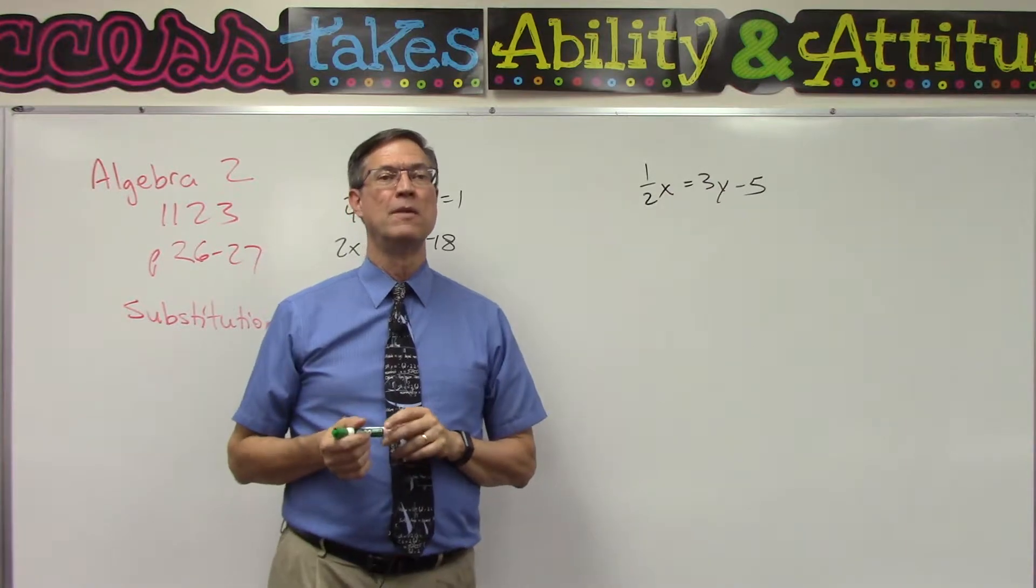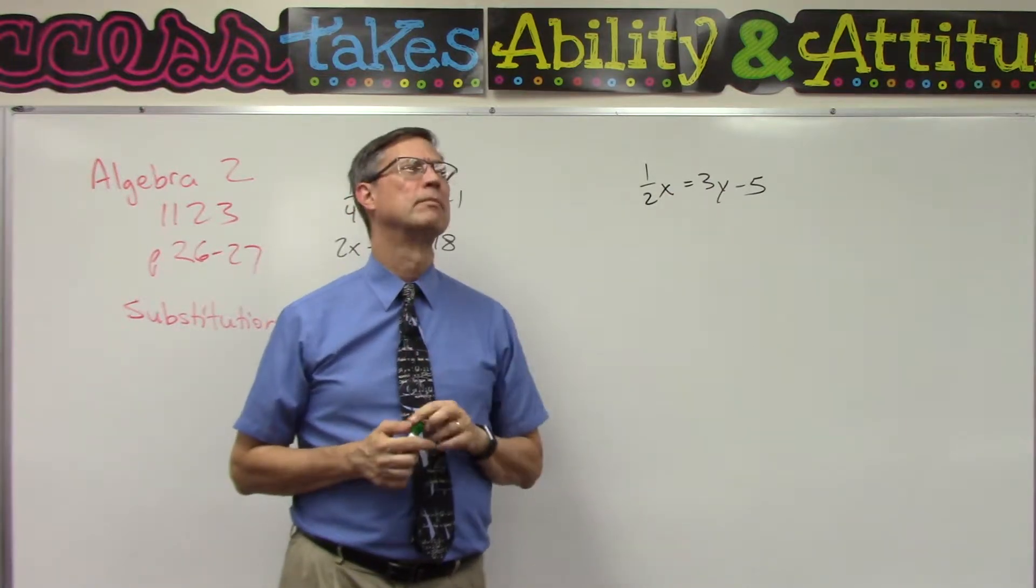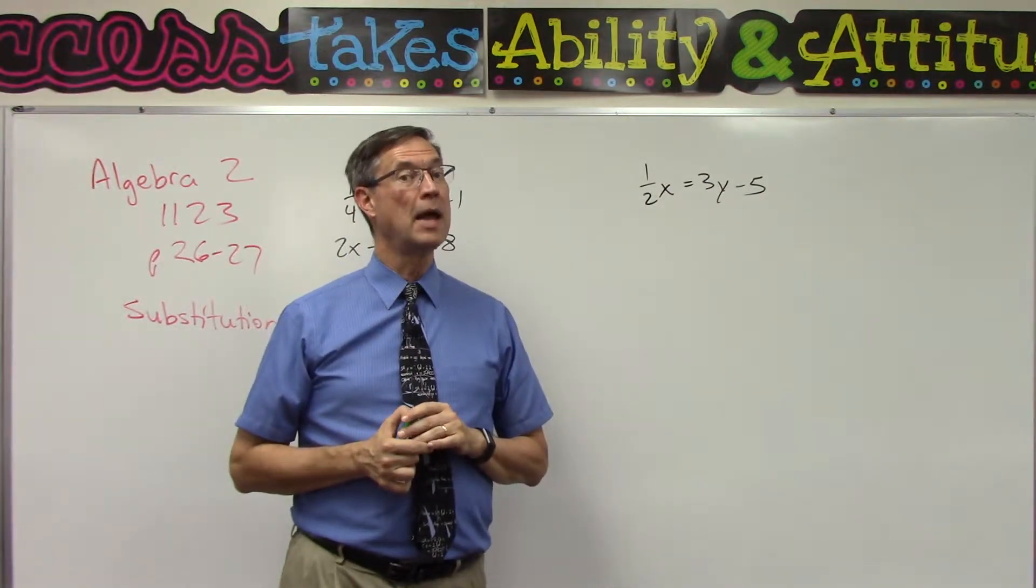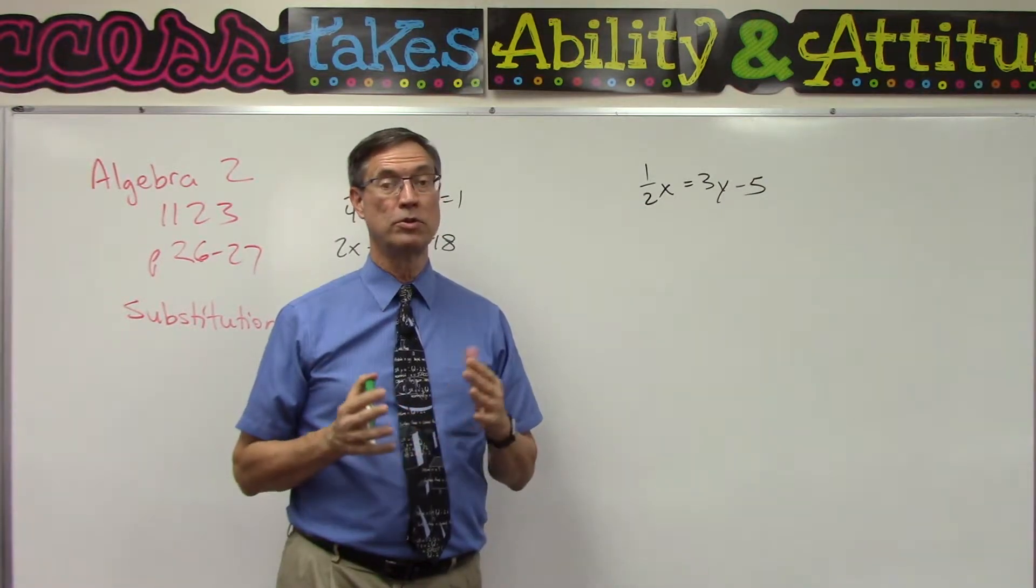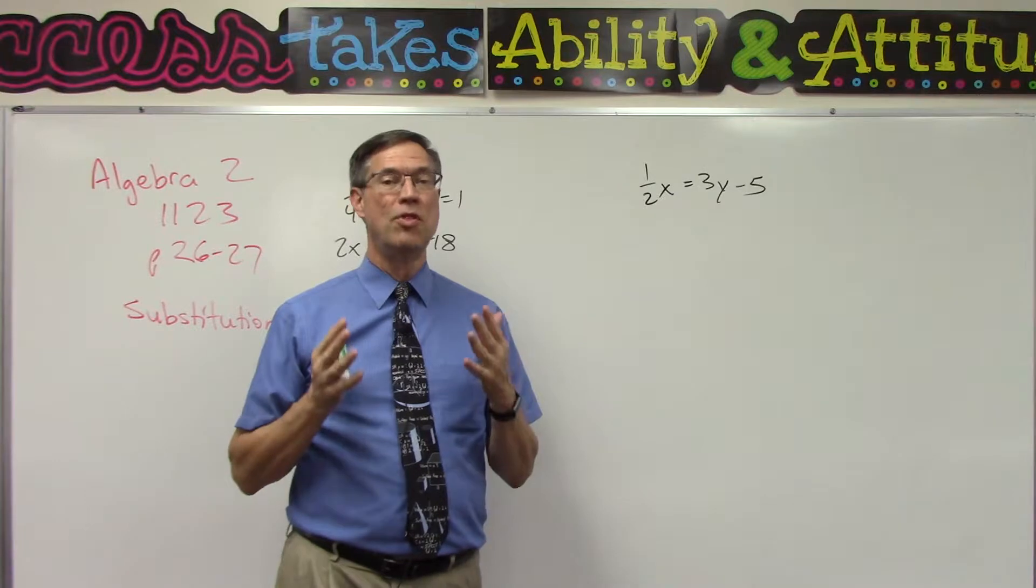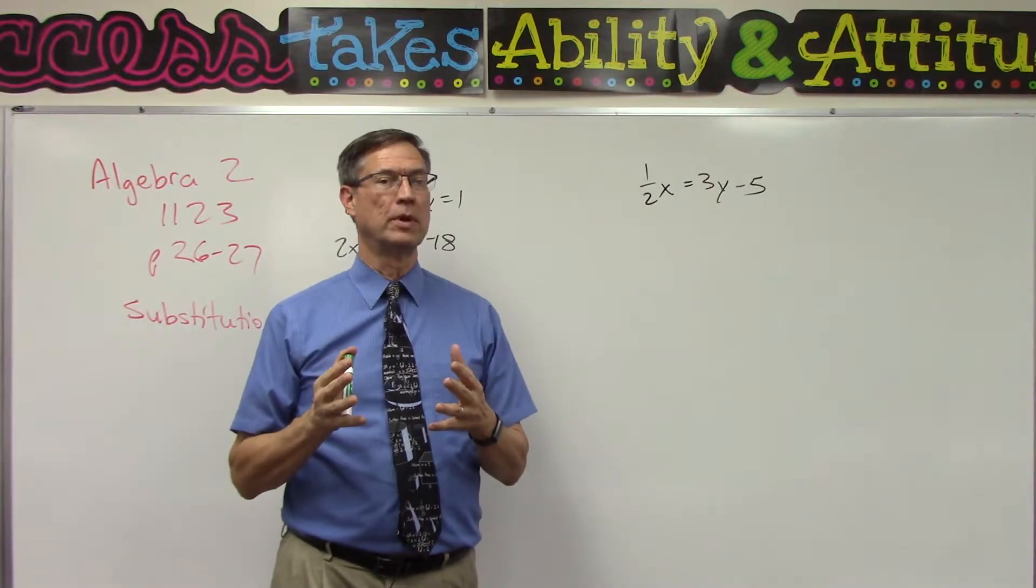If you can find one of them that does not have a fraction or number in front of it—in other words, the coefficient is one—that's the one you want to solve for. Zero in on that.